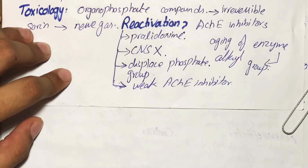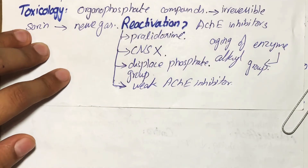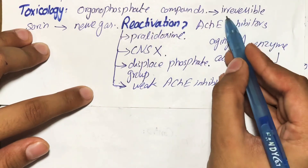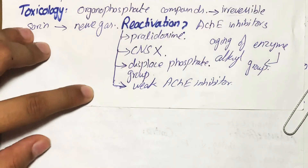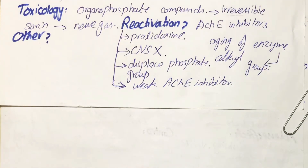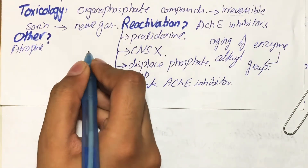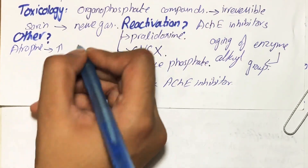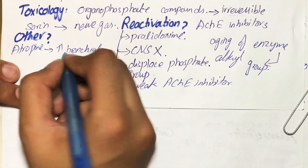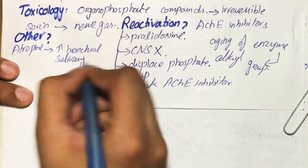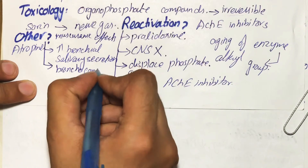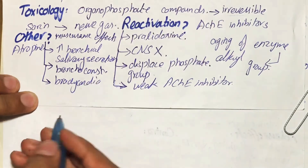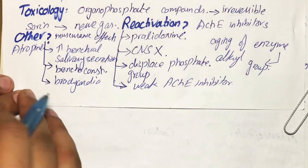Pralidoxime also cannot overcome the toxicity of reversible acetylcholinesterase inhibitors. As another treatment option, atropine is used to prevent muscarinic effects of these agents, which include increased bronchial and salivary secretions, bronchoconstriction, and bradycardia.